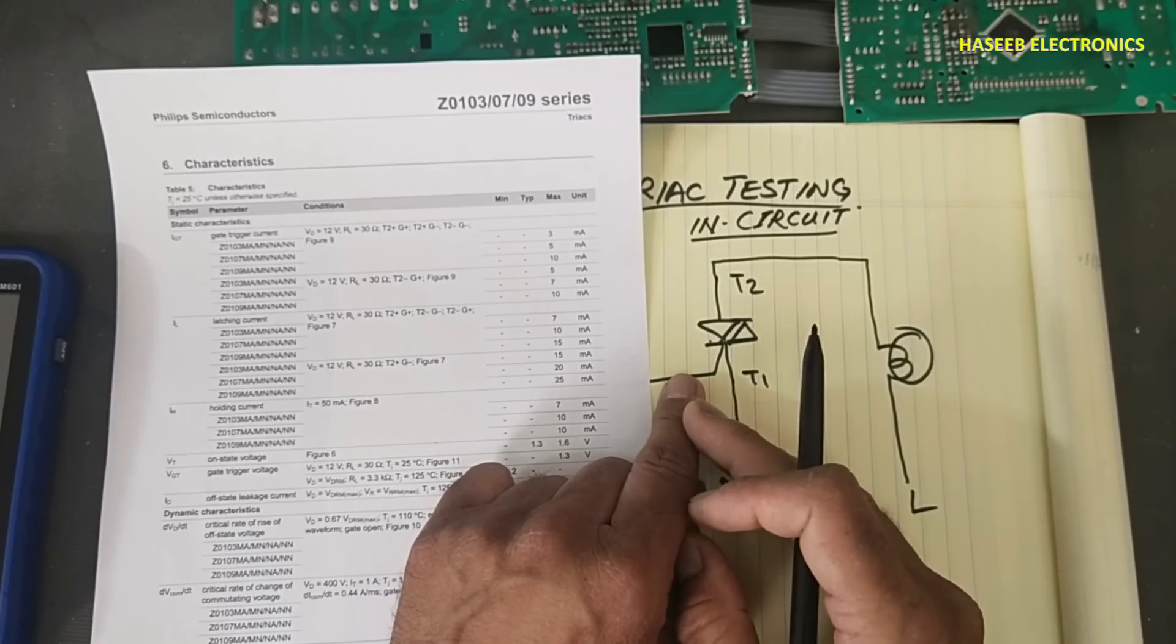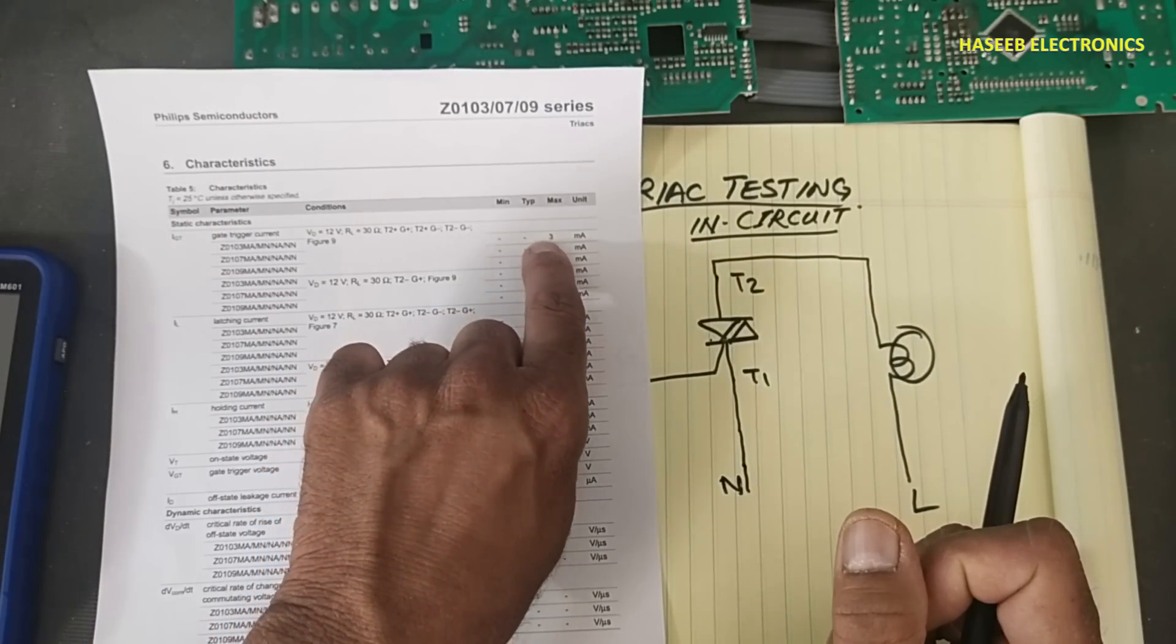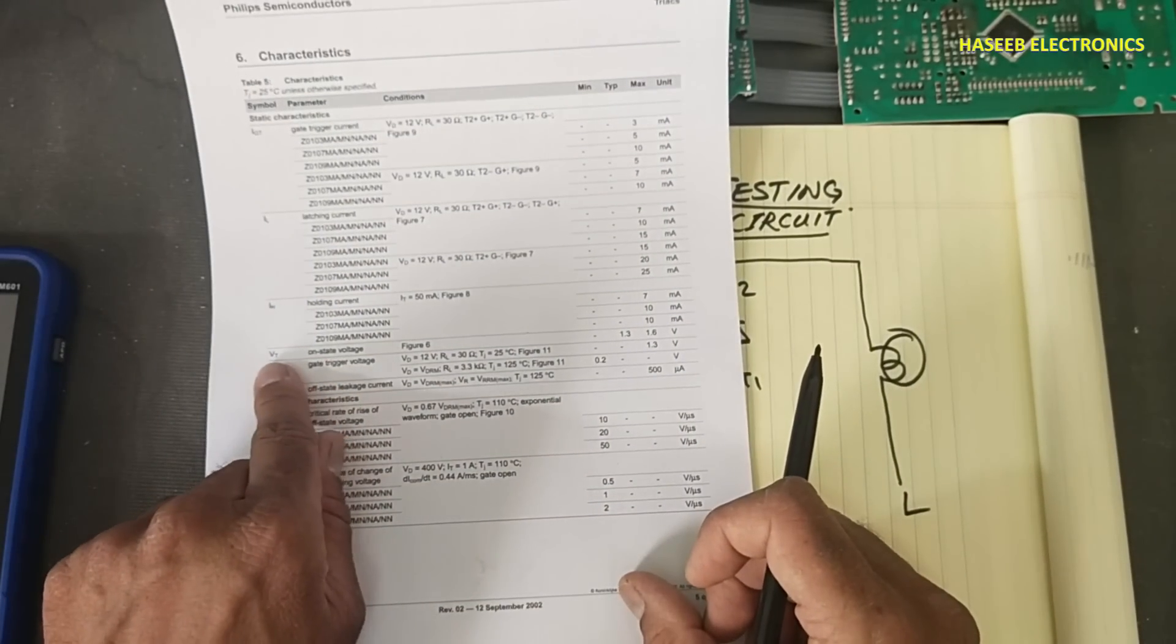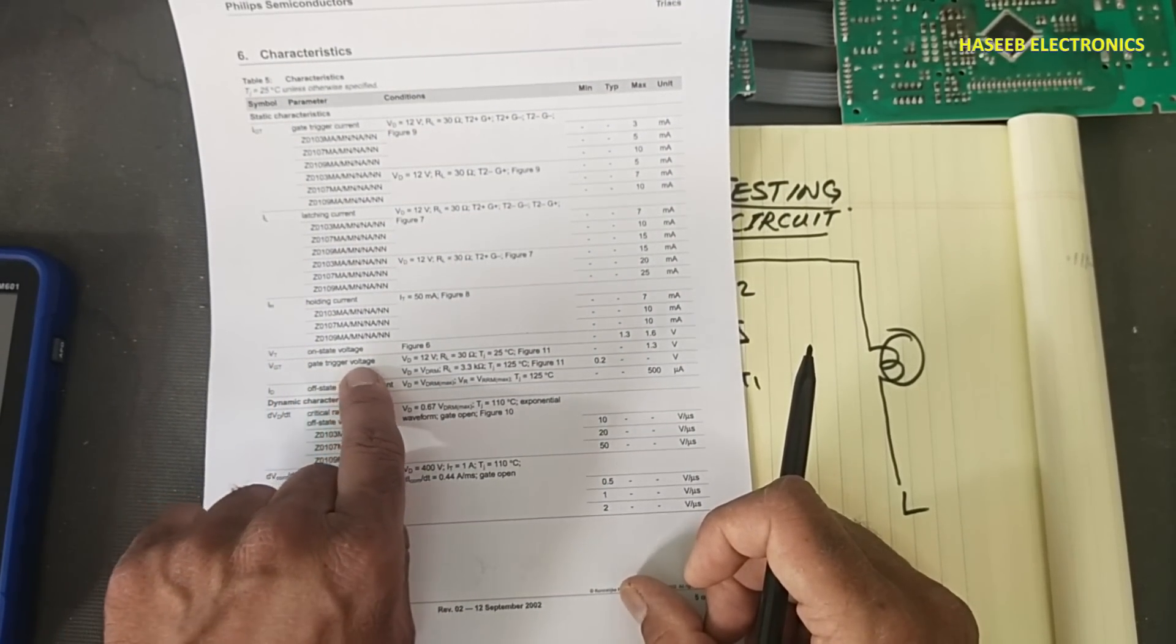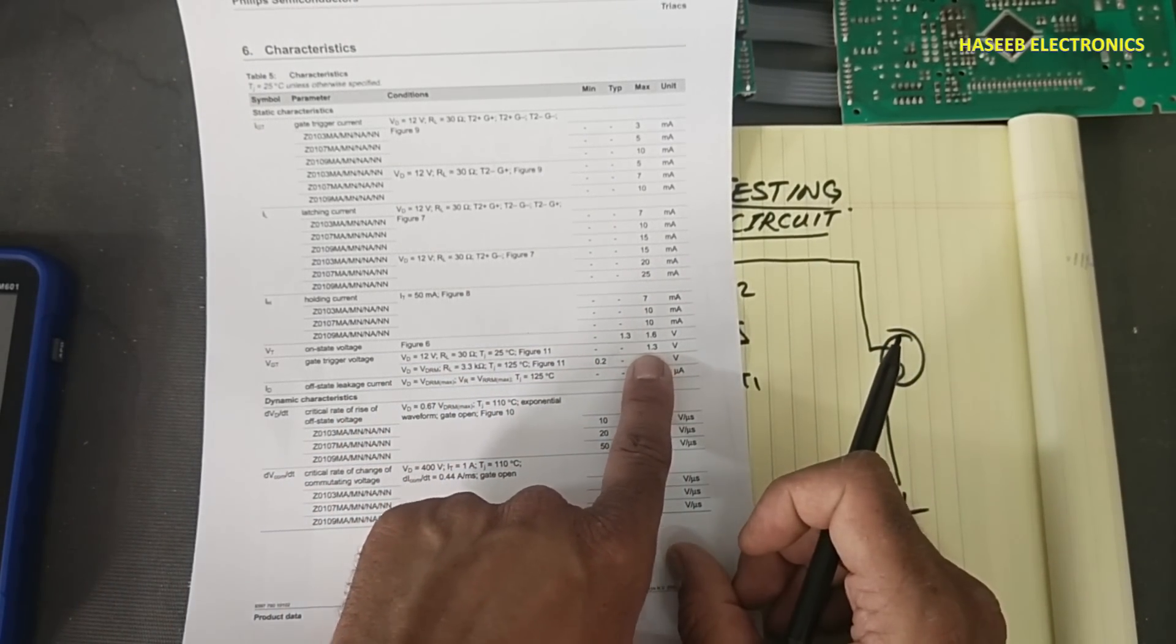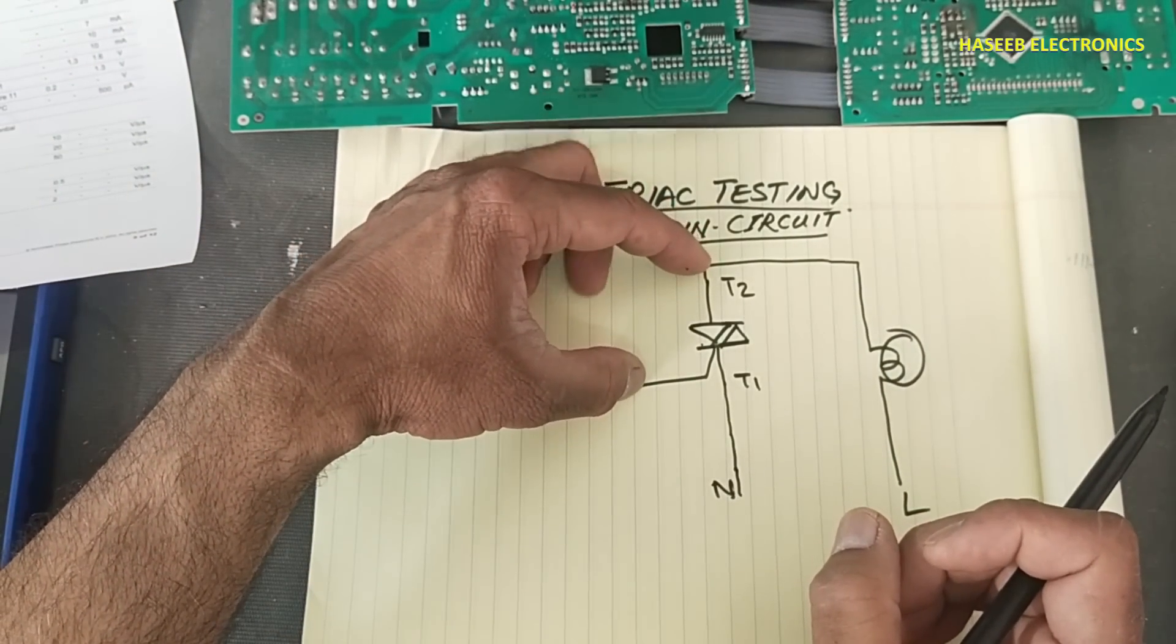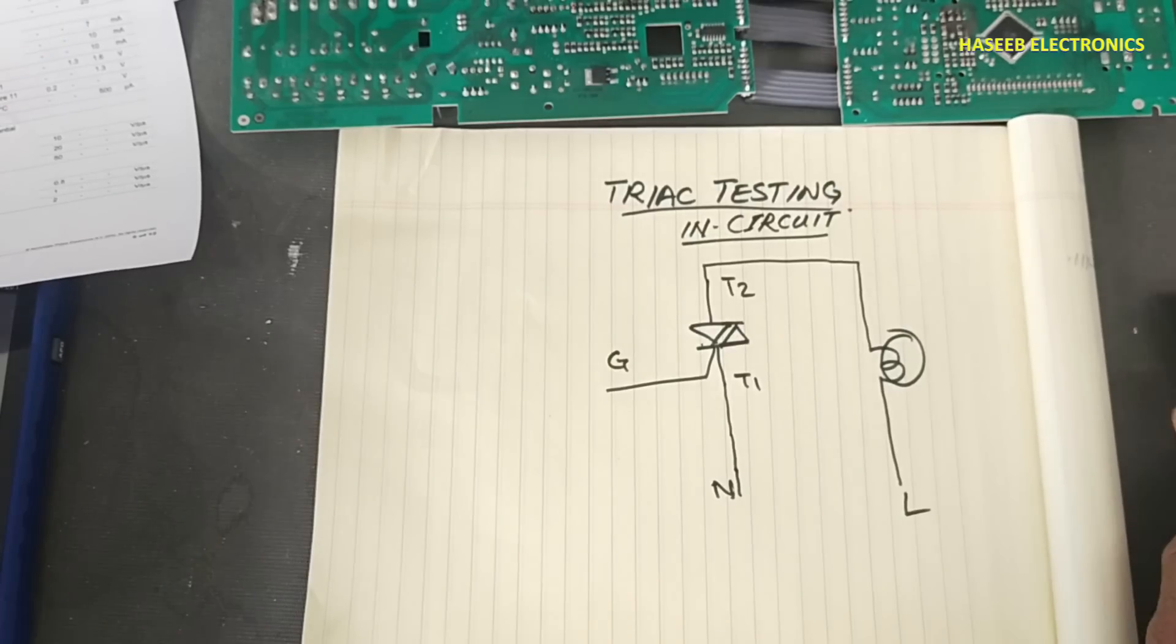This Z0103's gate trigger current is 3 milliampere maximum. So we need a maximum of 3 milliampere to trigger the gate. This point must be considered - this is the maximum limit. And the VGT gate trigger voltage is 1.3 volts, also a maximum limit.